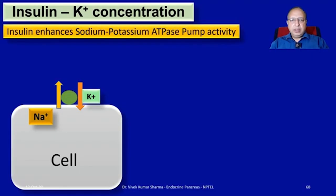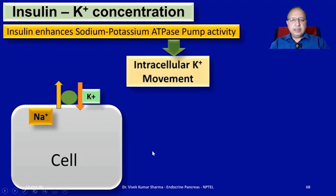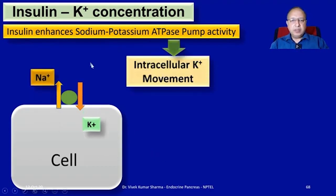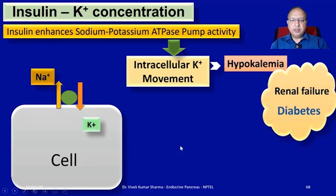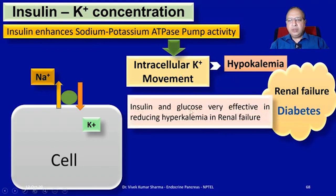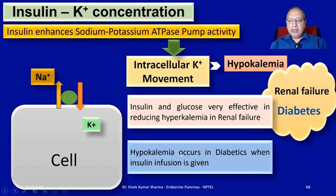Insulin causes an increase in the activity of the sodium-potassium ATPase enzyme, which increases the movement of potassium into the cells. This intracellular potassium movement is important in diabetes management. In renal failure or diabetes, if excess insulin is given, hypokalemia might occur. However, insulin and glucose are very effective in reducing hyperkalemia in renal failure, and hypokalemia occurs in diabetics when insulin infusion is given in larger doses than needed.